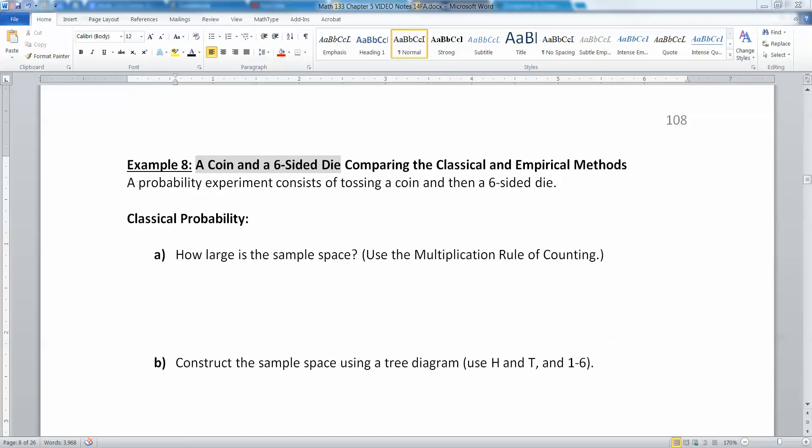Since we've learned two kinds of probabilities, it's important to take a moment here to compare those two probabilities, namely the classical and the empirical probability, and think about how those differences show up and why they matter to us.